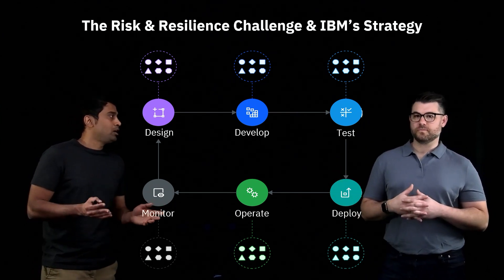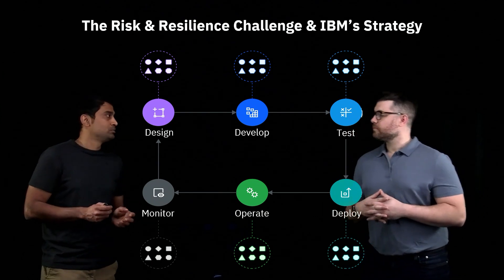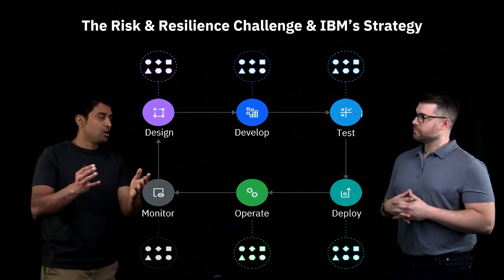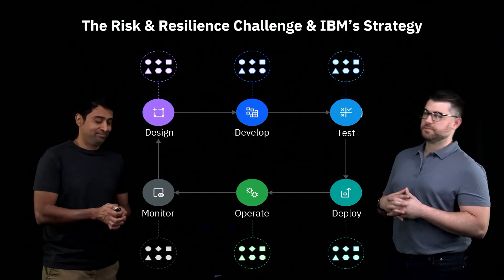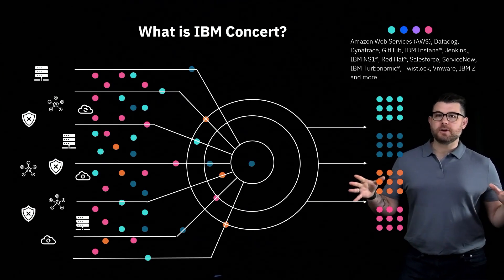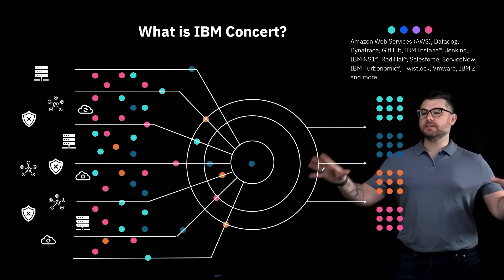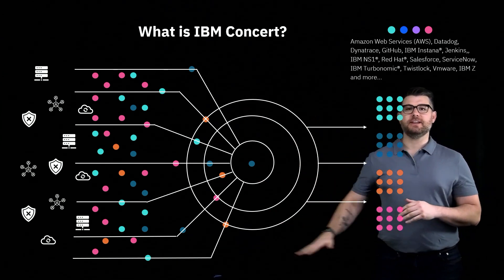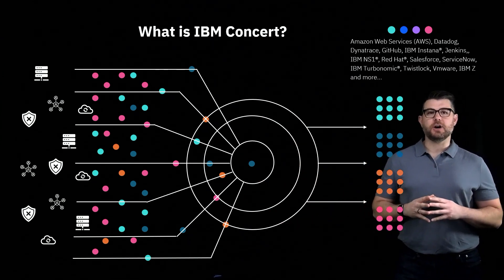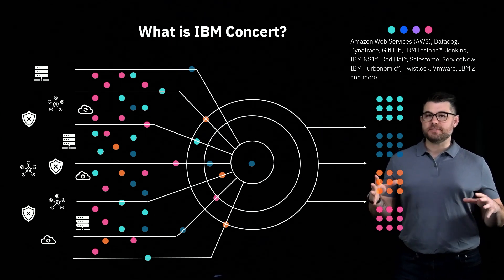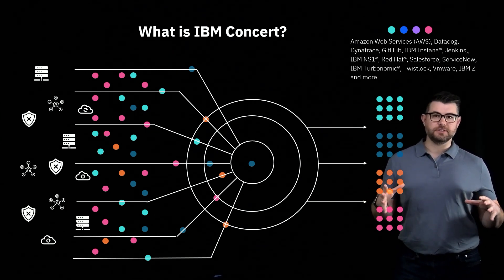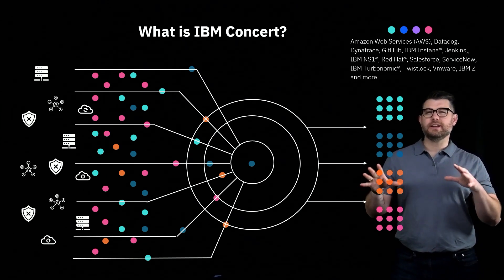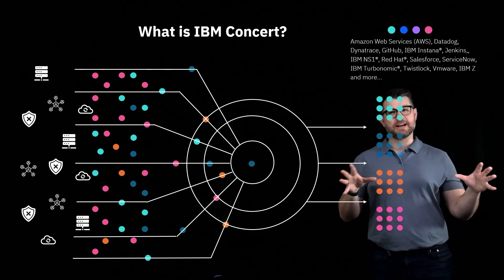So we talked about the problems customers face. Now, can you tell us how IBM Concert can help solve these problems? Sure, I'd love to. IBM Concert is what we like to call the connective tissue that correlates disparate application data, transforms it into actionable knowledge, and ensures real-time visibility and faster remediation, and a proactive approach to risk, resilience, and more. We go by this whole thing of collect, visualize, and action.